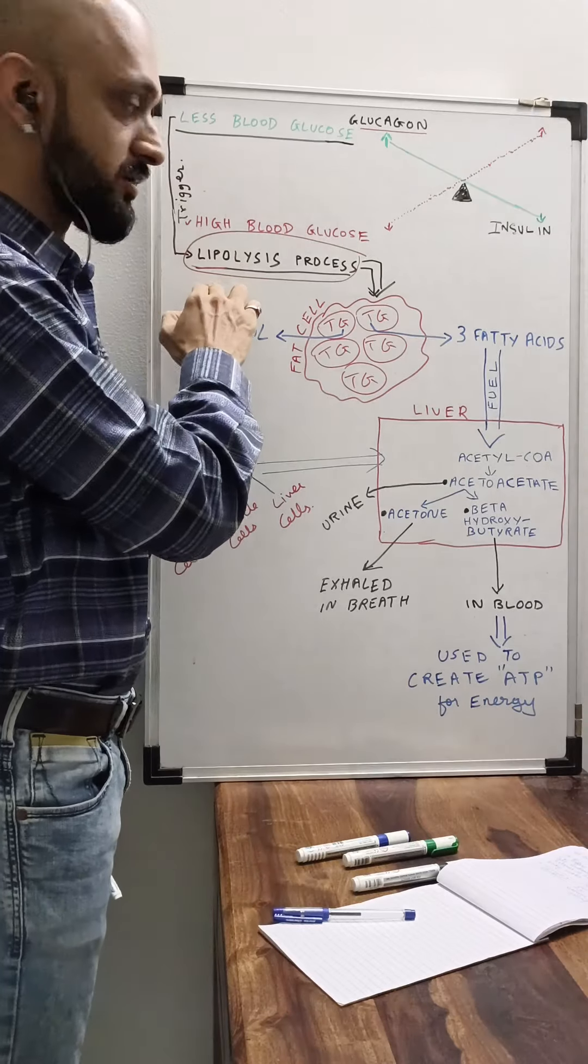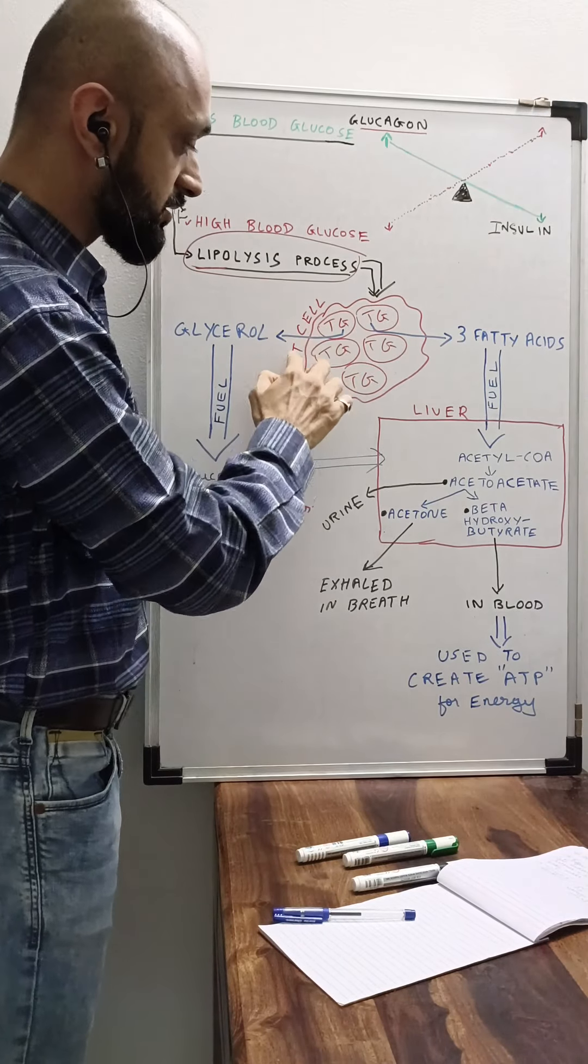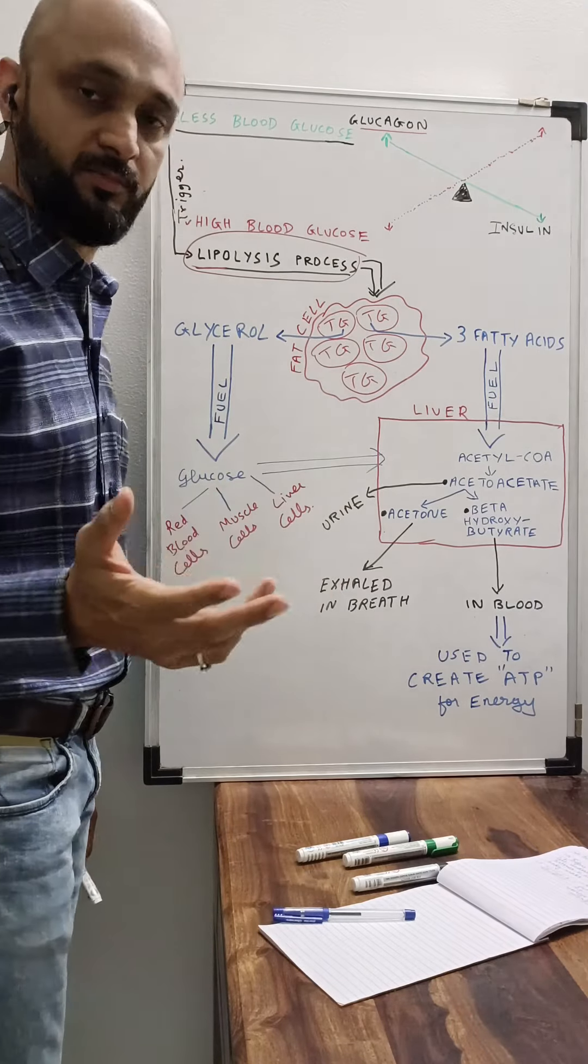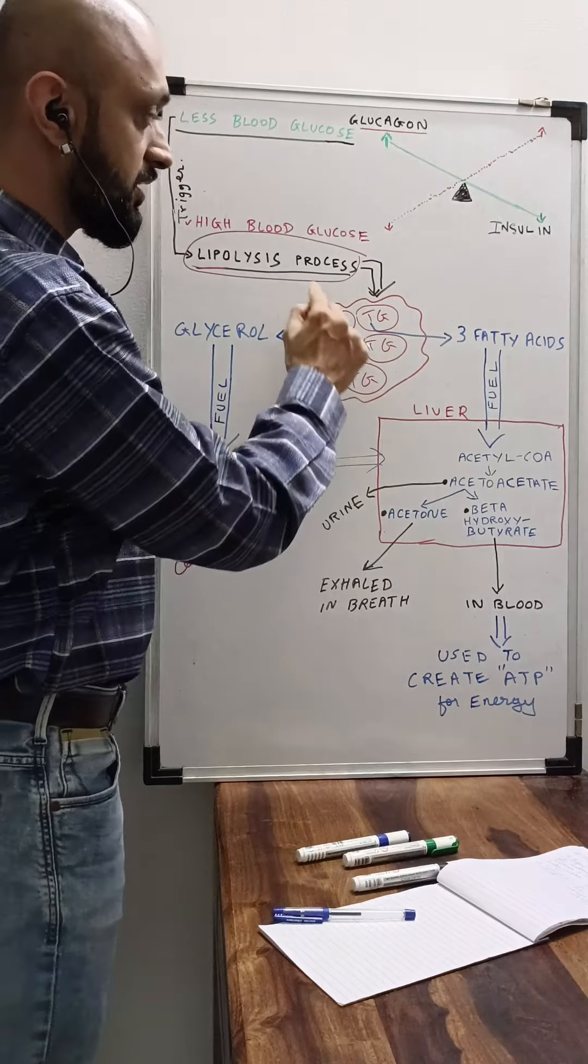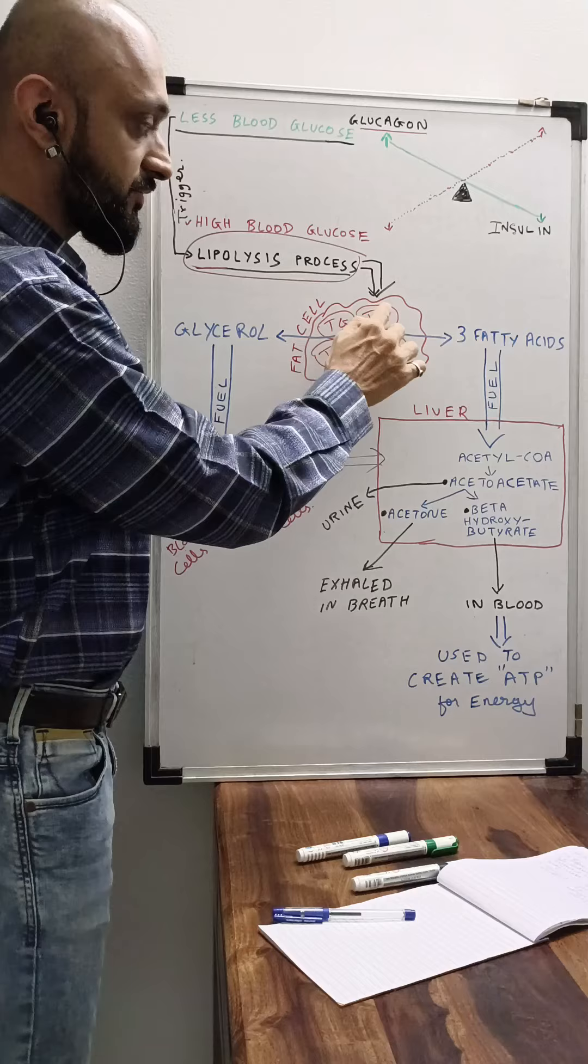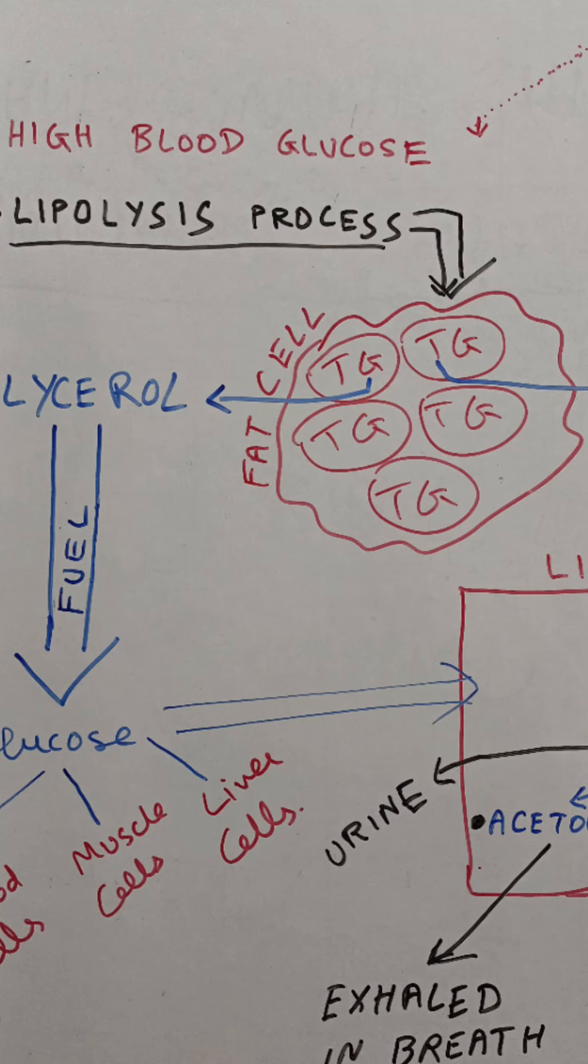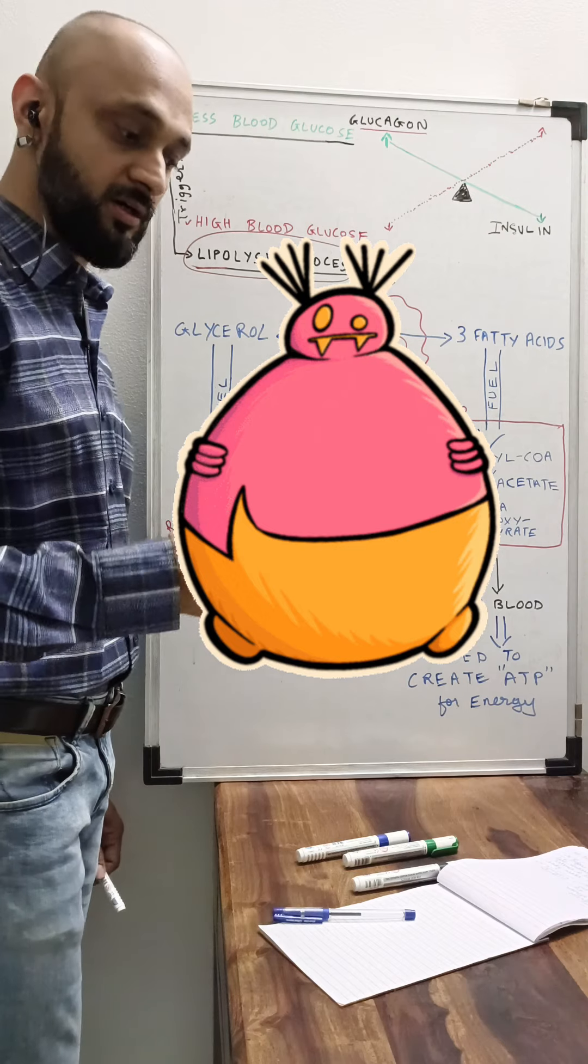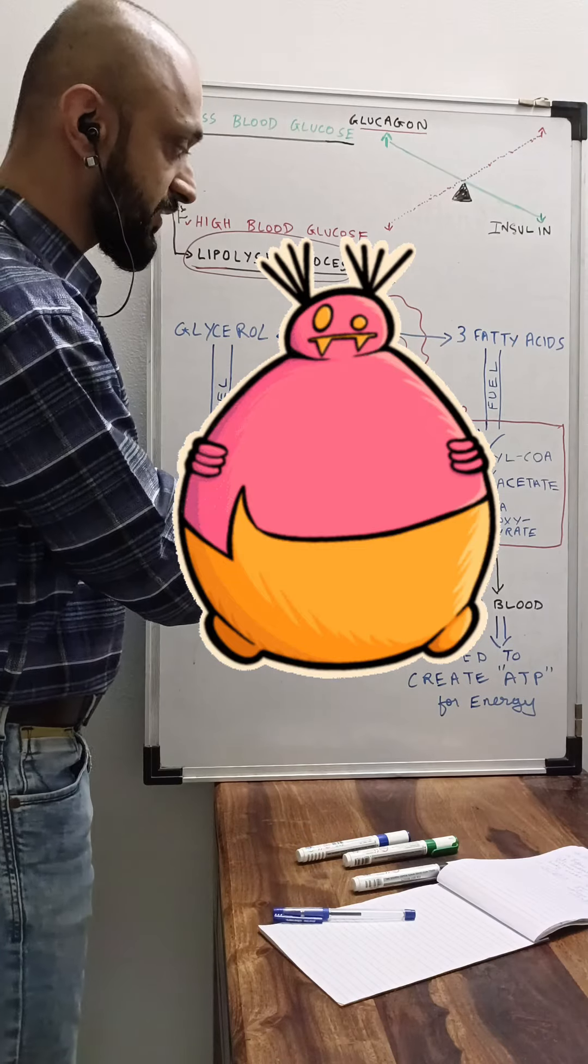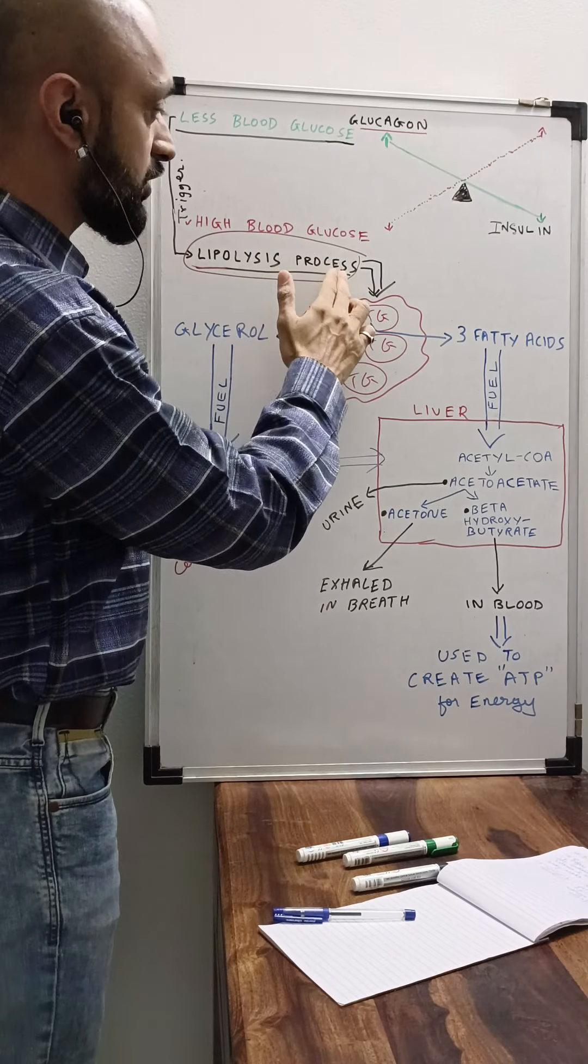Let's say this is the fat cell. I am depicting this as only one fat cell, but there are multiple fat cells. The lipolysis process has started. As I shared in my previous video, the fat cell has no limit, it is unlimited, it can grow and expand itself with the number of triglycerides coming in.